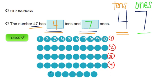And how many do we have left over? One, two, three, four, five, six, seven. So this is our seven ones.